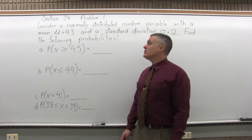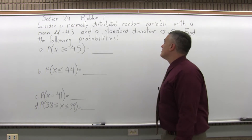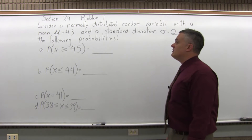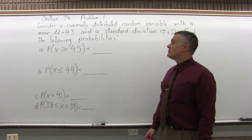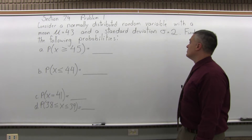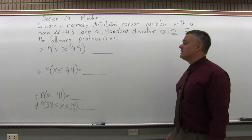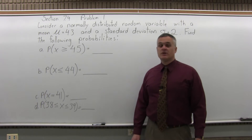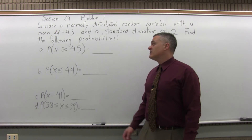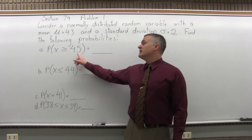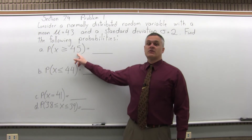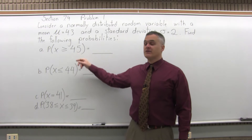Consider a normally distributed random variable with a mean mu equal to 43 and a standard deviation sigma equal to 2. Find the following probabilities. The first one says: find the probability that x is greater than or equal to 45.